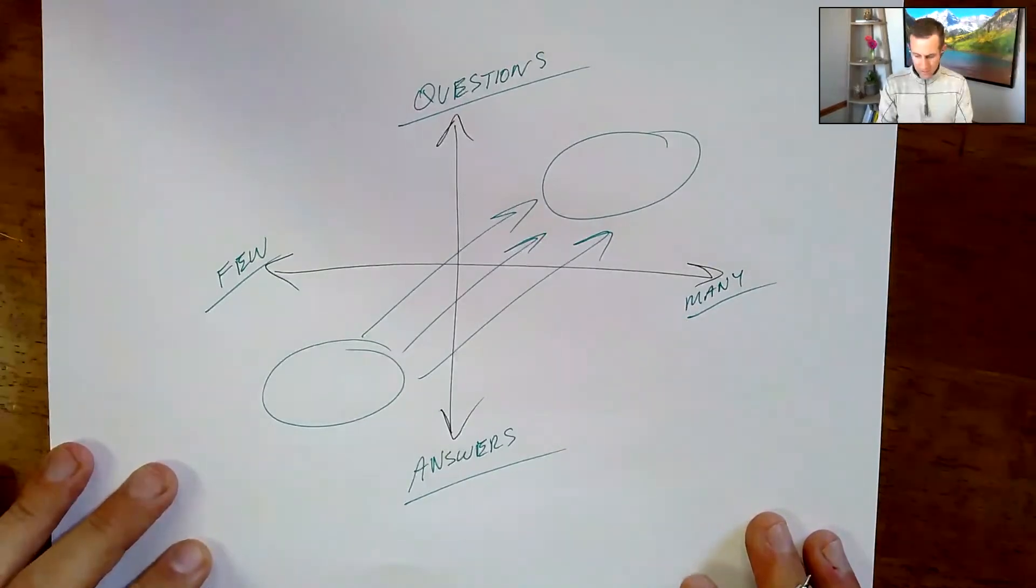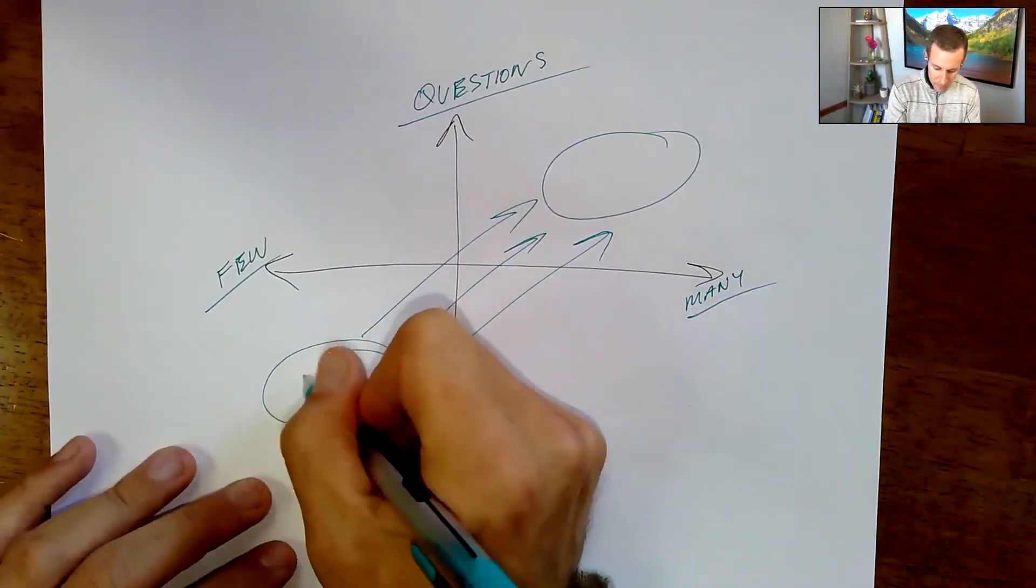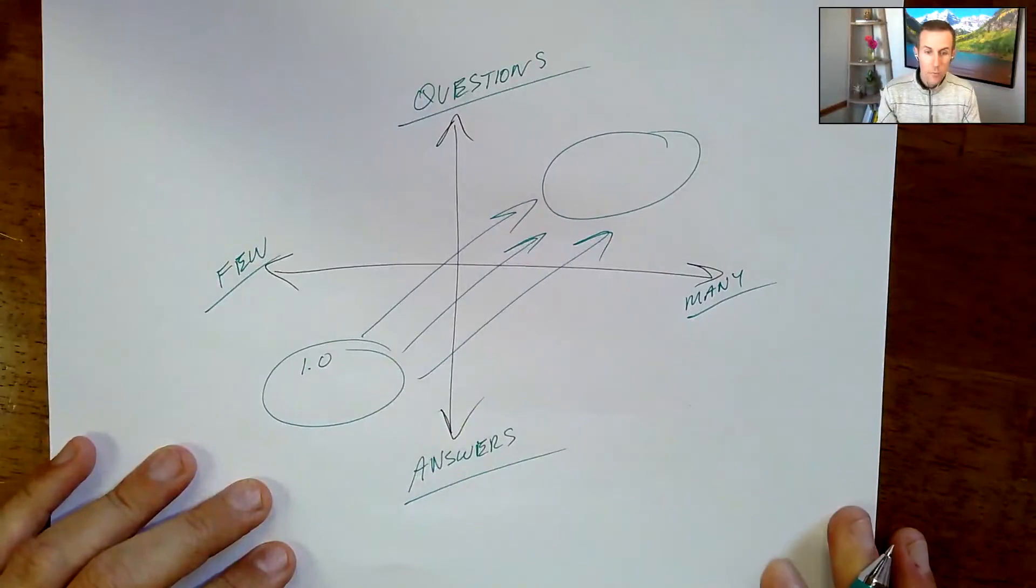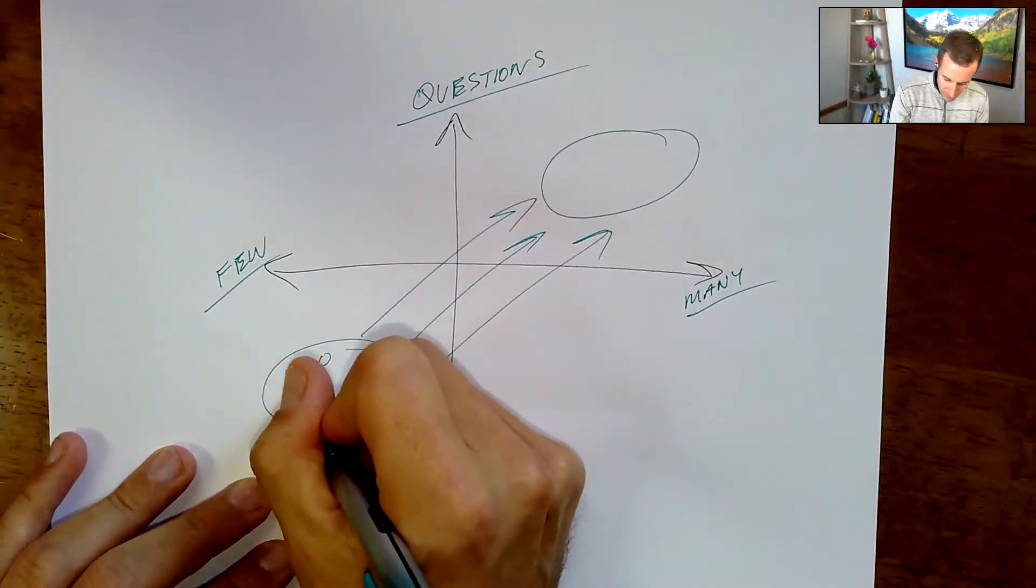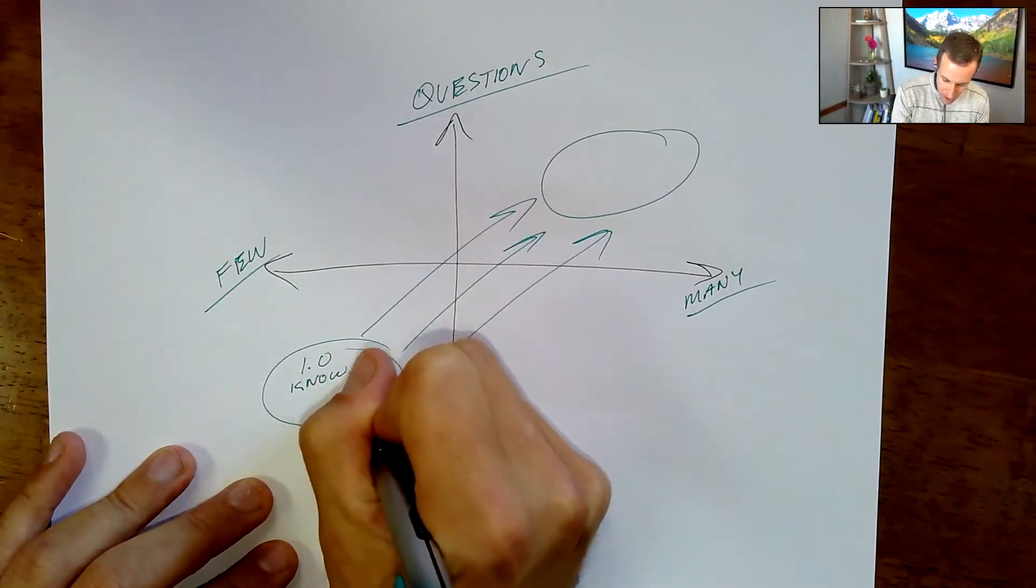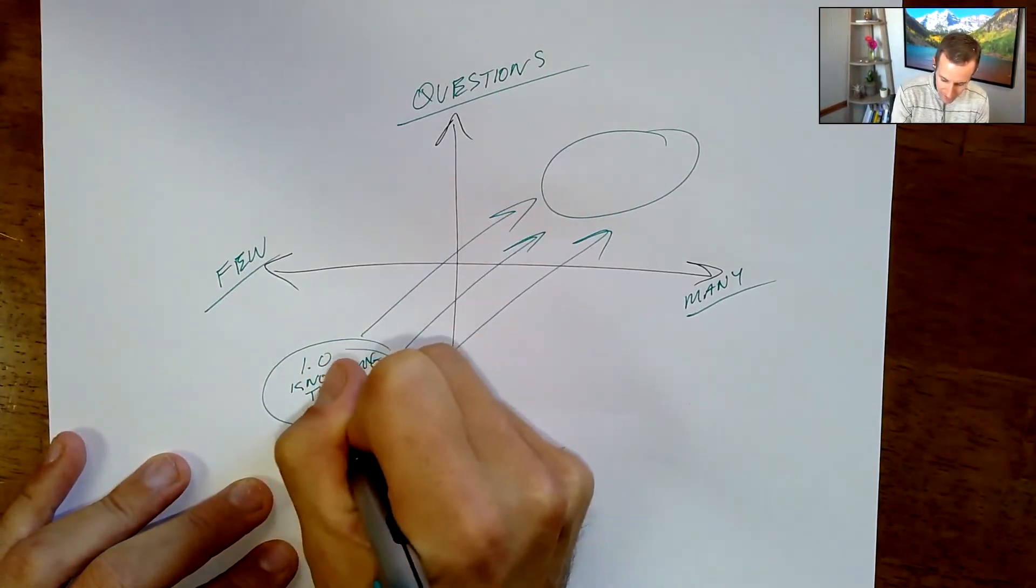And if you think about this, what we're moving away from is what some people would call a 1.0 or industrial age model of leading or teaching. Some would say this is all about knowing, telling, and controlling.